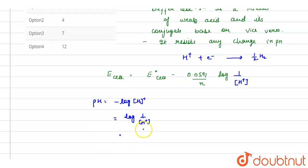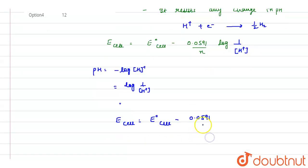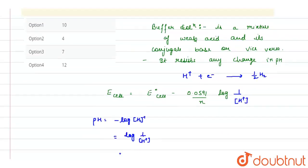Which is equals to this, that means this equation can also be written as E is equals to E naught cell minus 0.0591 upon n times pH. Now value of E naught cell is 0, value of E cell is given in this question.